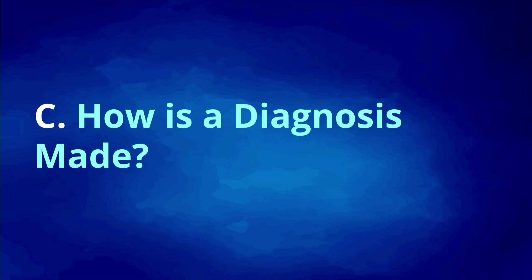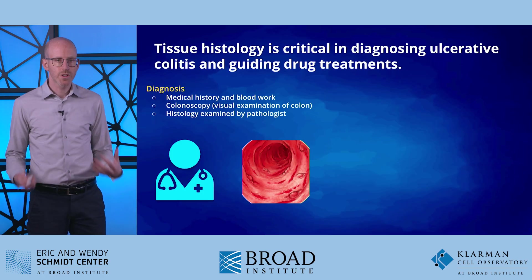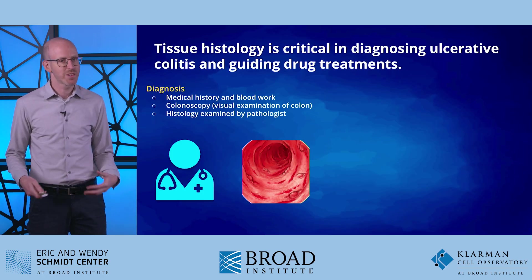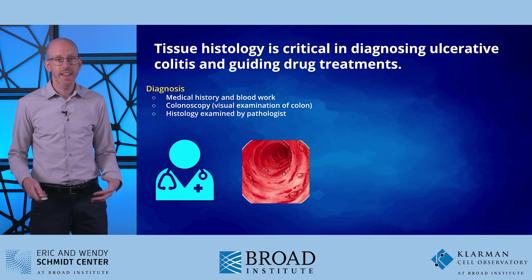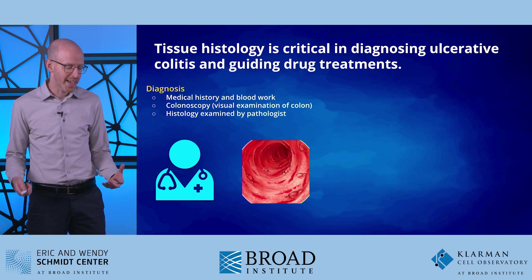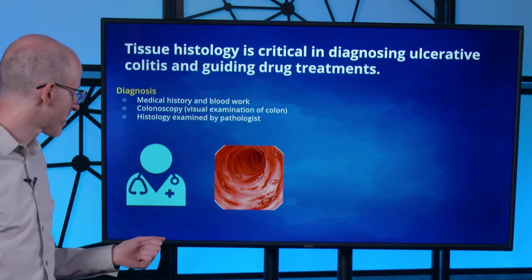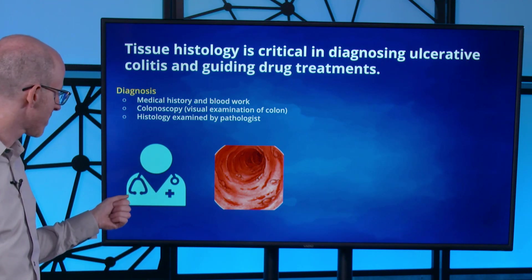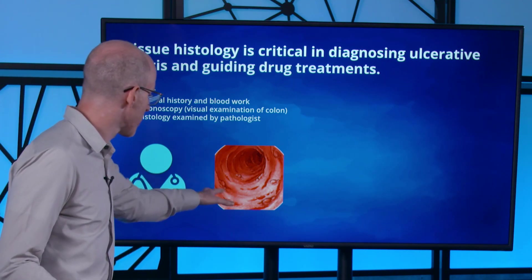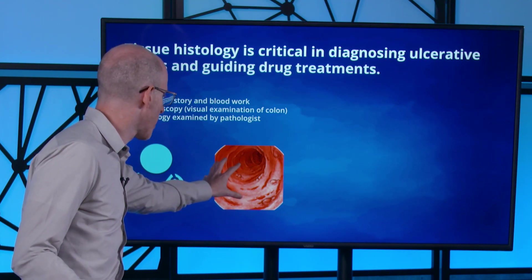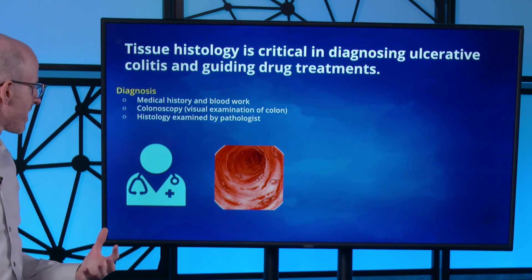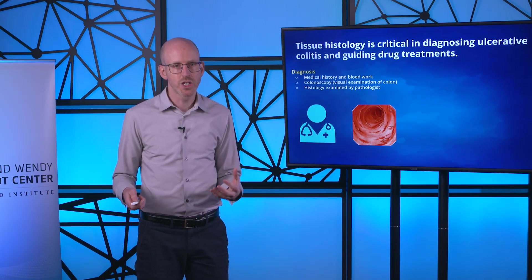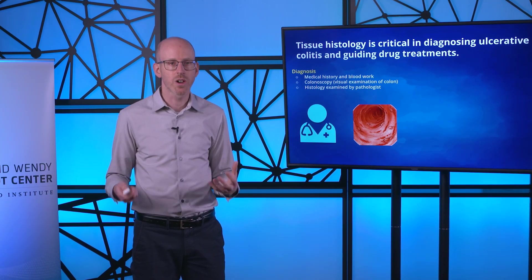Let's talk about how a medical doctor can make a diagnosis of ulcerative colitis. First, the doctor takes a medical history and does some blood work. Then there's a colonoscopy — a tube inserted into the gastrointestinal tract and colon with a camera — allowing assessment of the level of inflammation. Finally, a pathologist can do histology on the colon tissue.